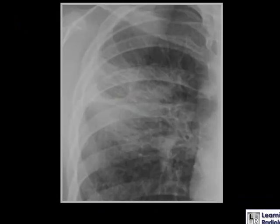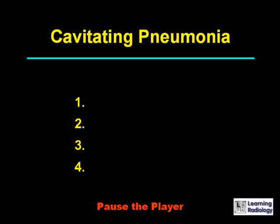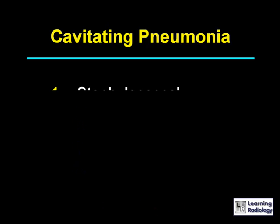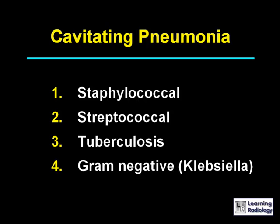This is the next differential: cavitating pneumonia. There are four causes: staphylococcal, streptococcal, tuberculosis, and gram-negative pneumonias such as Klebsiella.